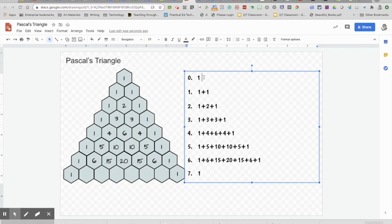Now let's look at another thing. So if I say 1 plus 1, that equals 2. 1 plus 2 plus 1 equals 4. 1 plus 3 plus 3 plus 1. Now I like to group these 1 plus 3 and 3 plus 1. They're both equal to 4, so 4 plus 4 equals 8.